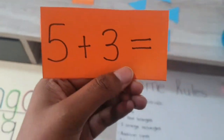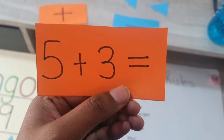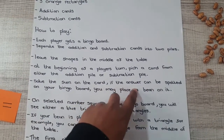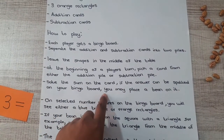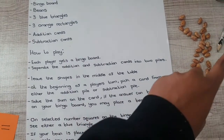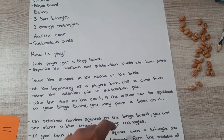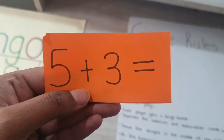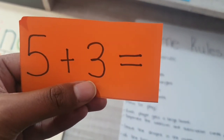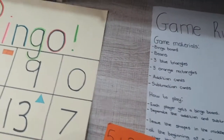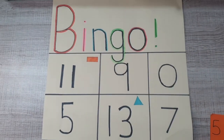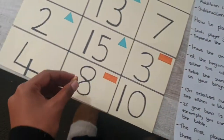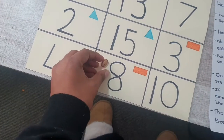We're going to take one — this is five plus three. Solve the sum on the card. If the answer can be spotted on your bingo board, you may place a bean on it. The card I picked is five plus three, which equals eight. Let's find number eight — there we go, and I place my bean on it.